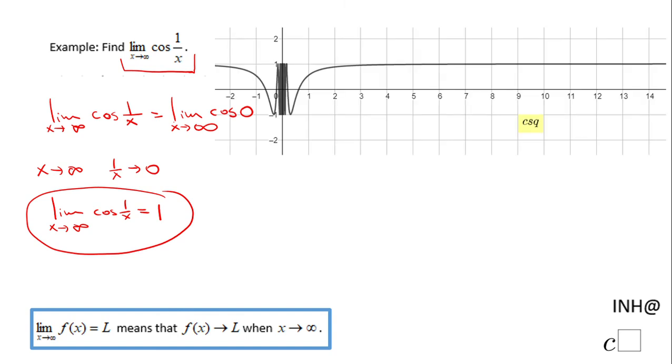You can notice the same thing in the picture. Once x is getting larger and larger, this function is getting closer and closer to this horizontal asymptote, which is y equals 1. Yes, the function is oscillating in the middle, but when x is getting larger and larger, the limit exists and it is 1.